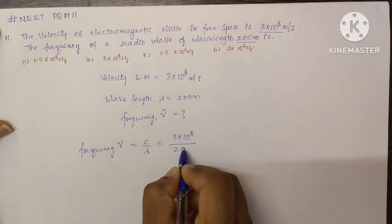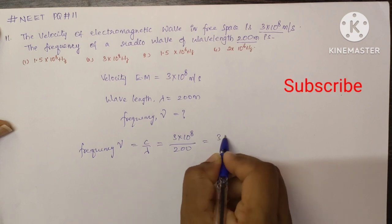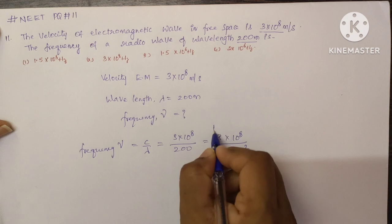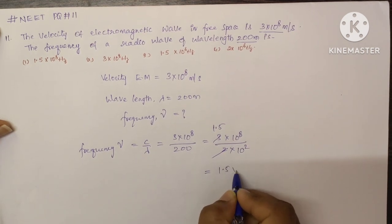And λ is 200, so we can write this as 3×10⁸ divided by 2×10². This will get cancelled, giving us 1.5×...